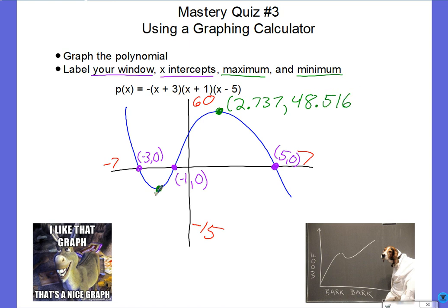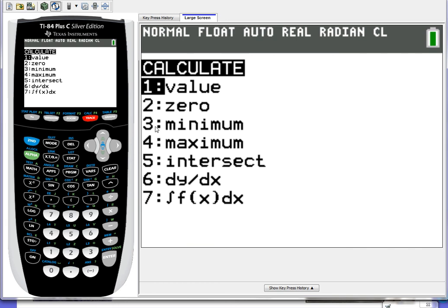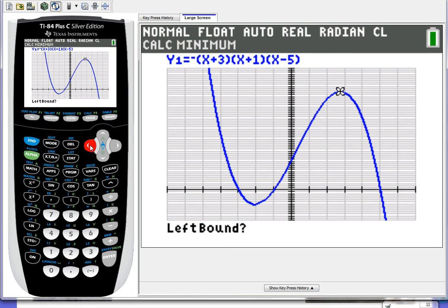Then I got to do my minimum, which is the same process, but I'm just going to choose a different option. Second, calc. And I'm going to go with minimum number three. And again, I moved my little spider guy over there. So we're going to slide our way over there. Almost there. Getting over there. There we go. Okay. So I got to get to the left of it first and then to the other side.